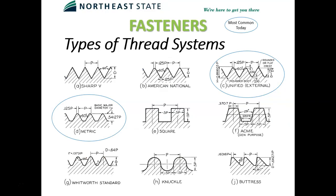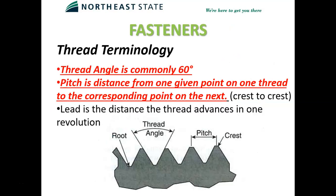There are different thread systems throughout the world. Some older systems have gone away, overtaken by the two most common: the unified thread system and the metric thread system. The square and acme threads are still used today — acme mainly for heavy-duty general-purpose applications like clamps. For bolts and fastening devices, the unified and metric thread systems are standard. Both have a 60-degree angle between thread flanks, and pitch is the distance from the top of one thread to the top of the next.